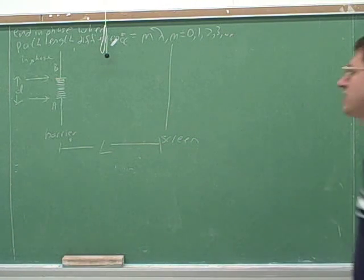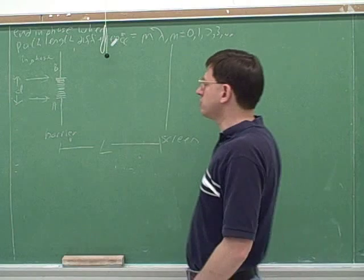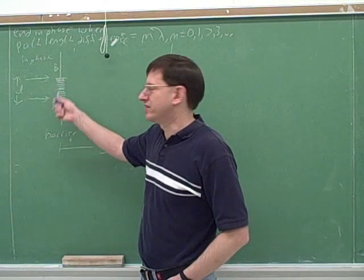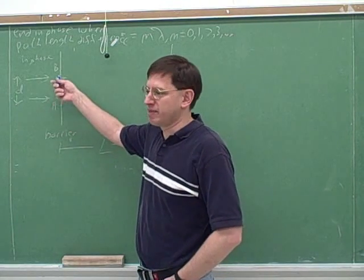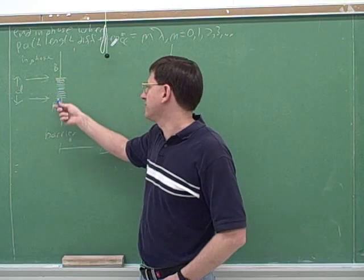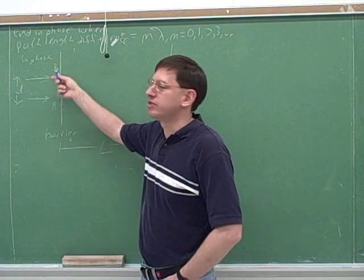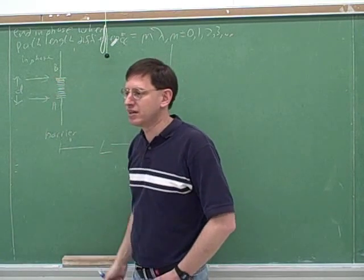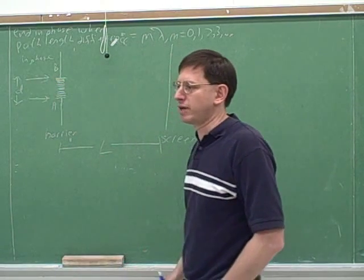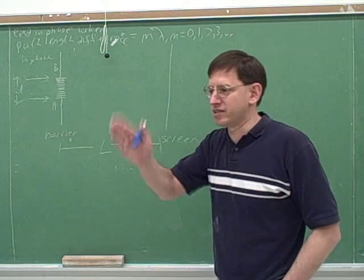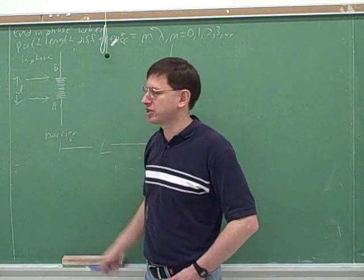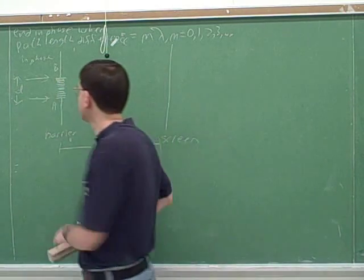So another very important example: we just did two slits, but you could have many slits. This is supposed to be a diagram of many slits — there could be hundreds of slits. This is sometimes called a diffraction grating. A grating is something with a bunch of very close slits. So here's our diffraction grating.